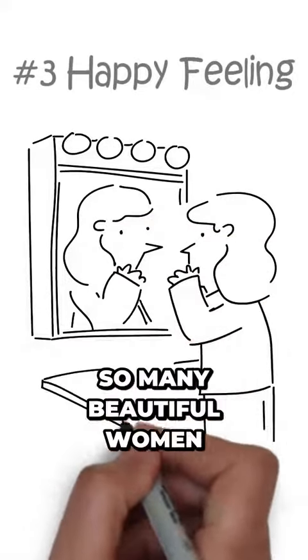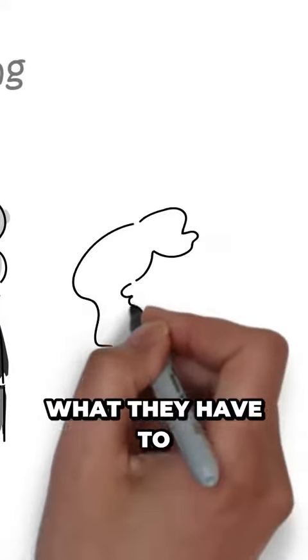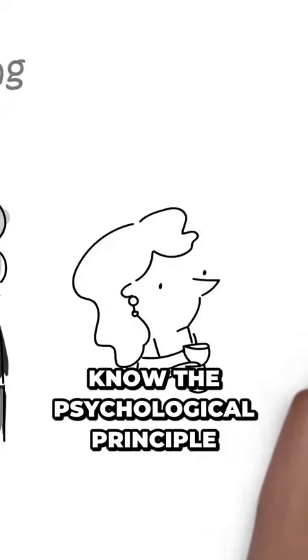You see so many beautiful women in beer or chocolate commercials, and you might be thinking what they have to do with beer. But advertisers know the psychological principle of associations.